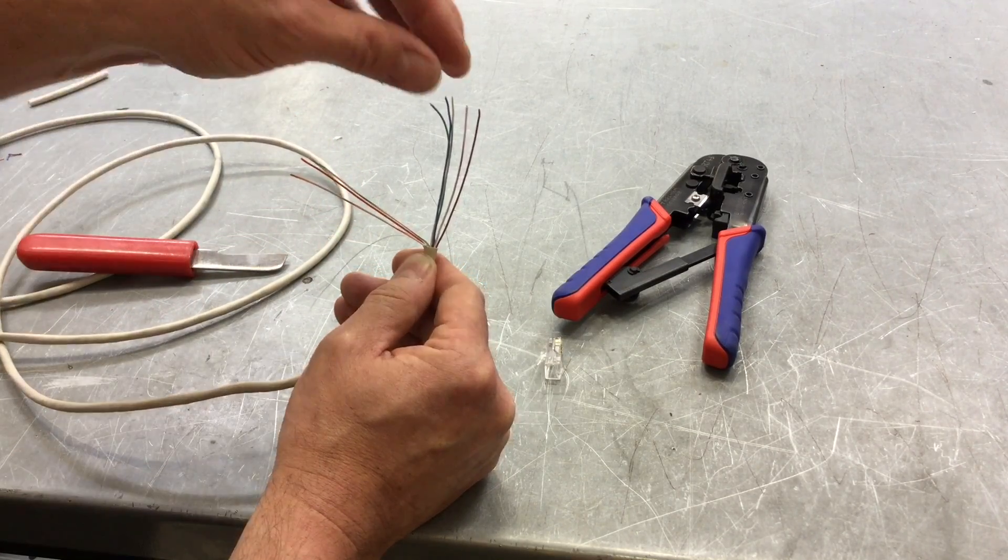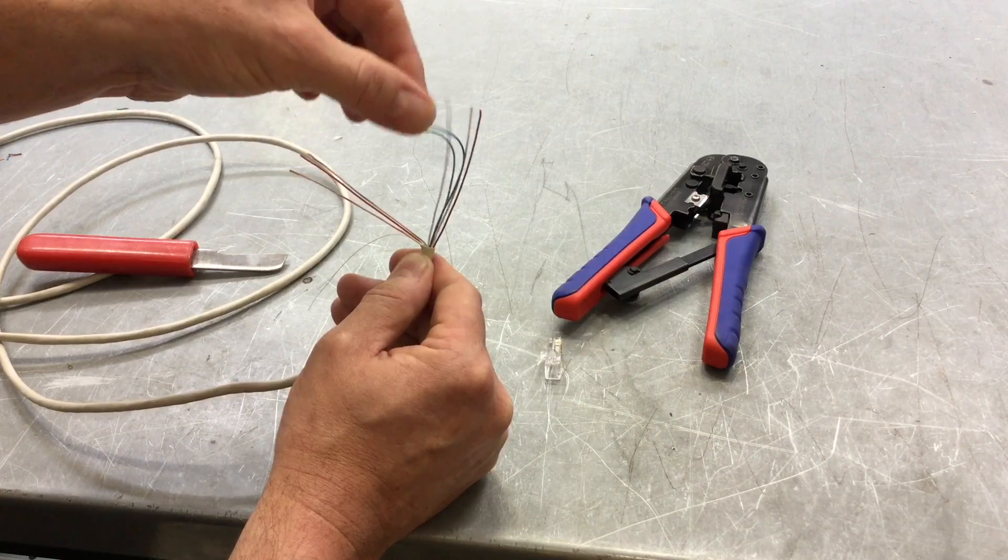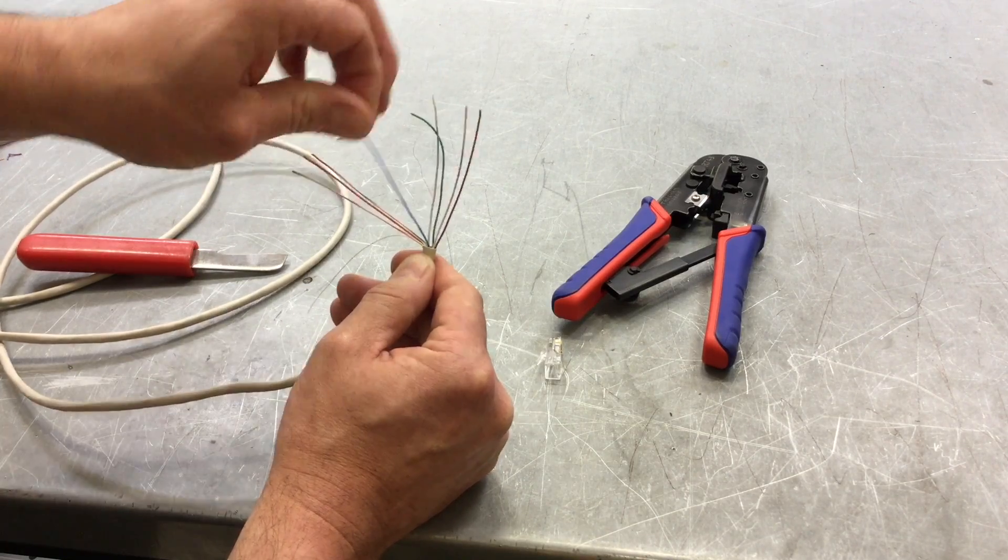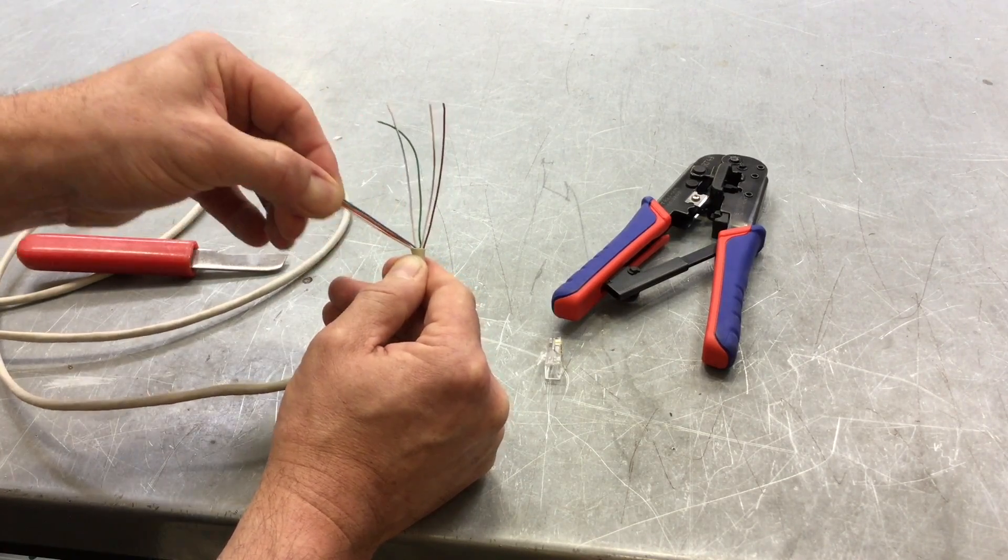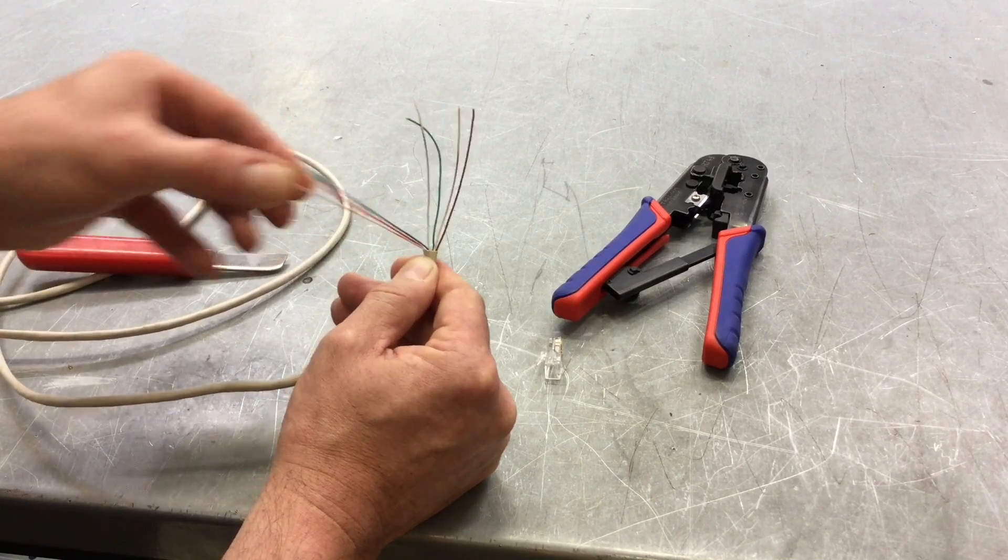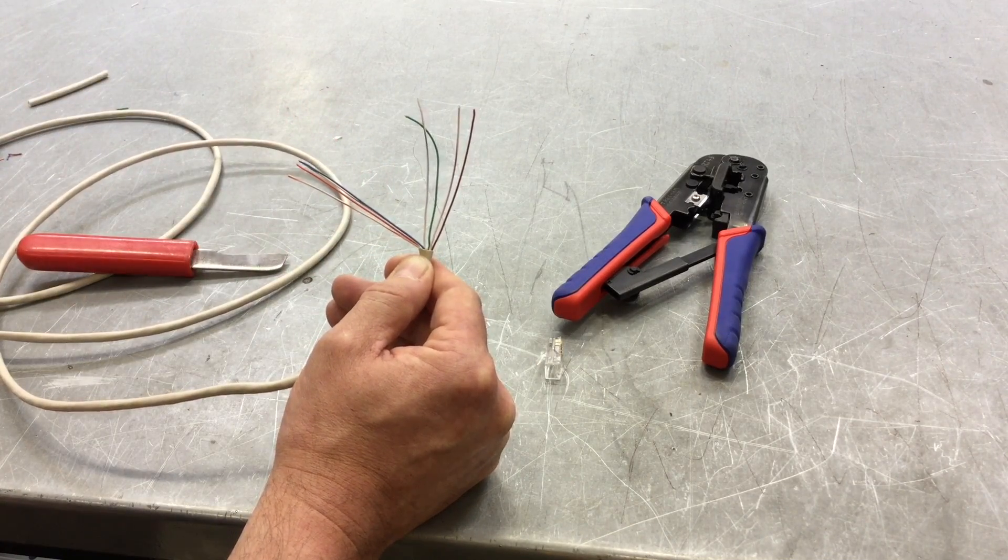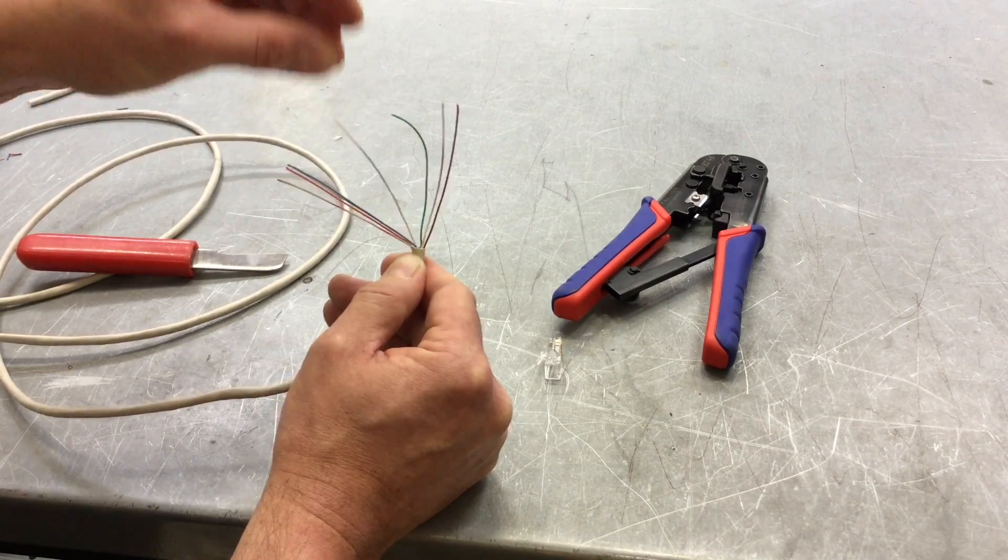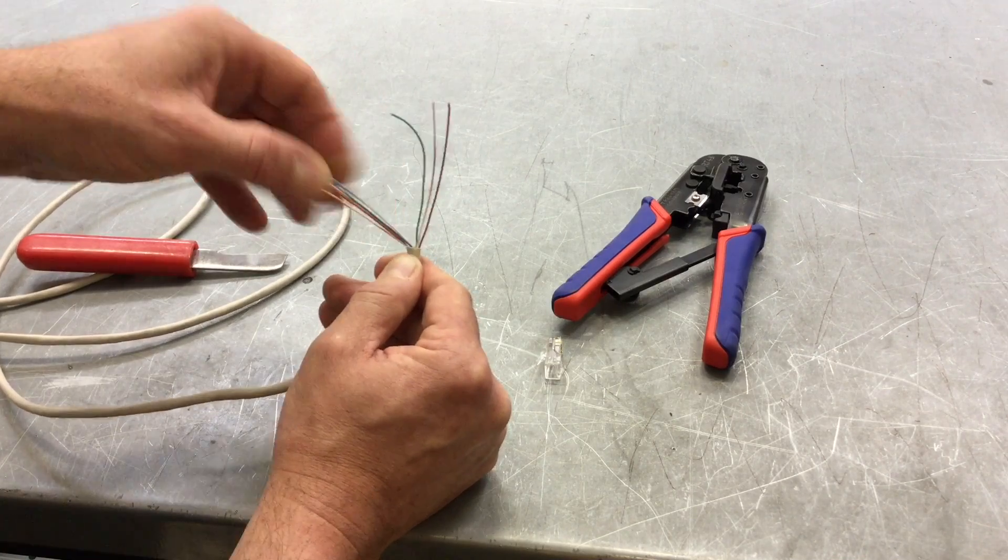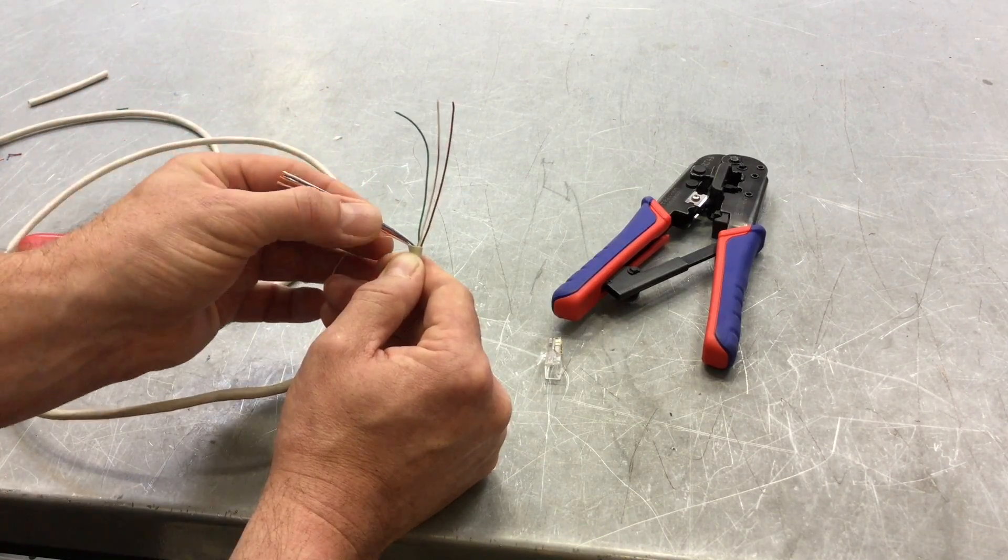The next one across is blue. Again I'm sure it's difficult for you to see but the color is blue. Get the blue one out, lay it on top of the others, nice and straight. Next one across is white and blue, so take out the white and blue next, laying it on top of the others.